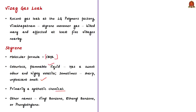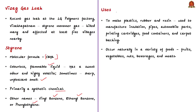Styrene is also known as vinyl benzene, ethinyl benzene, or phenyl ethylene. It is widely used to make plastics, rubber and resin products, which are used to manufacture a variety of products such as insulation, pipes, automobile parts, printing cartridges, food containers, and carpet backing. So we can say that styrene is widely used to make a variety of products.